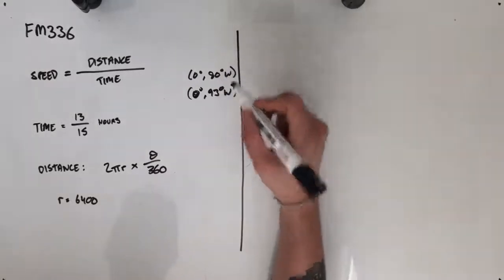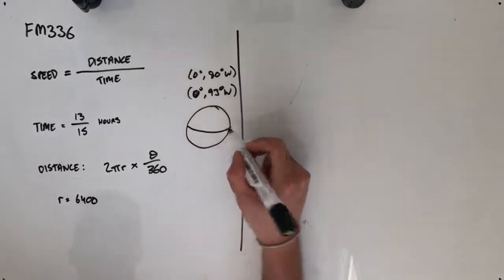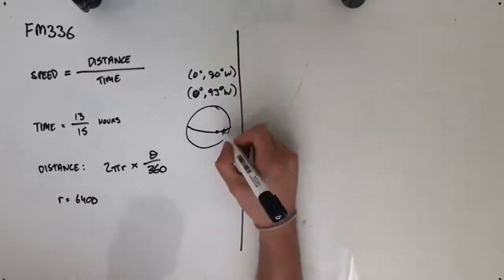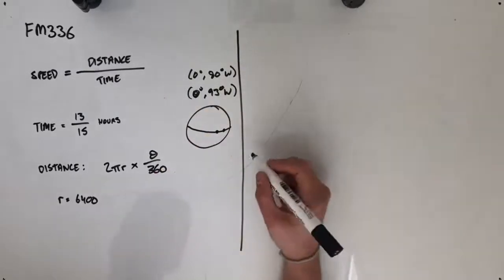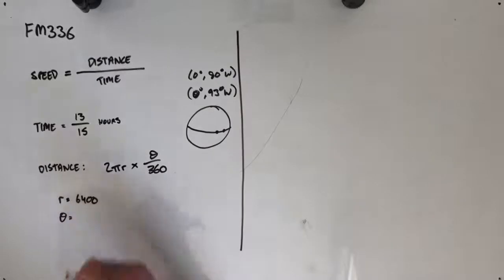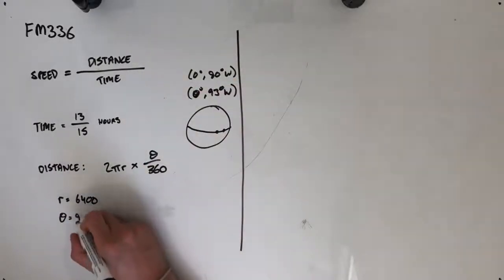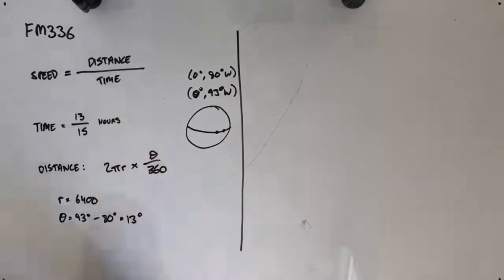This means the distance we're traveling is along the equator, so we might be going from this point here to a point over here. The equator is a great circle, which means it will have a radius of 6,400. Theta is then just the difference between these two angles: 93 degrees minus 80 degrees, which is 13 degrees.